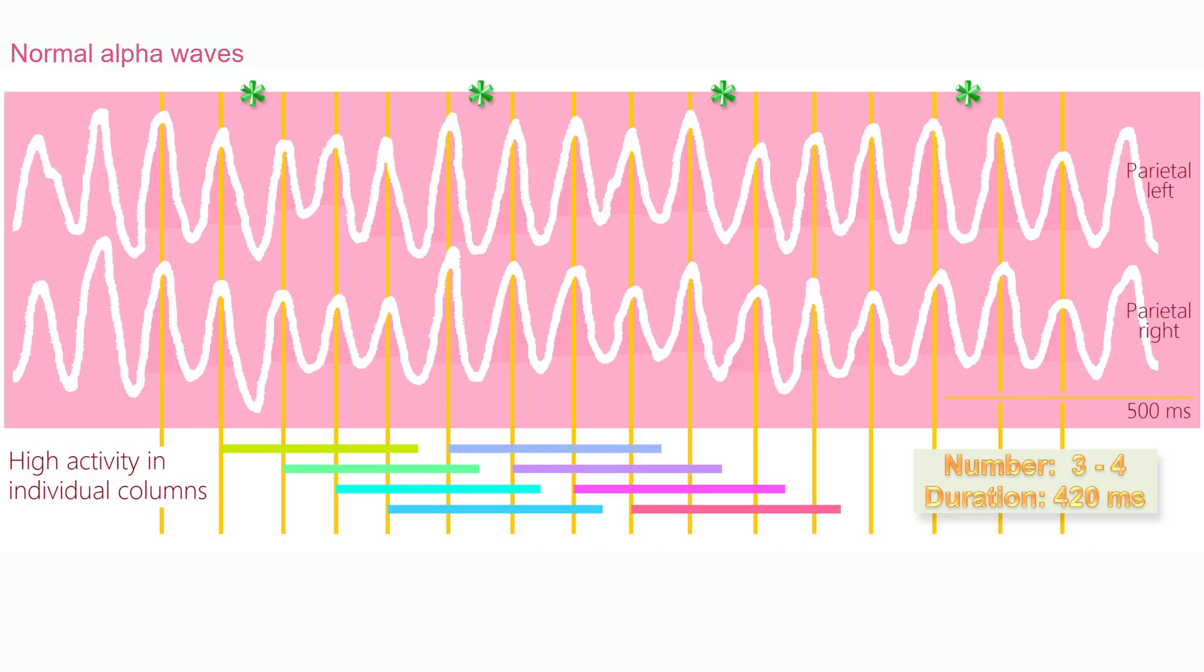The cerebral cortex consists of columns, and the activity in a column is high or low. A regulating system keeps the number of highly active columns between a lower and an upper limit.